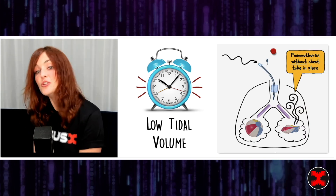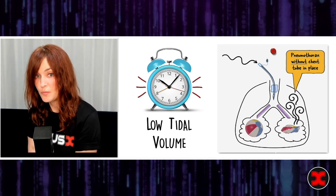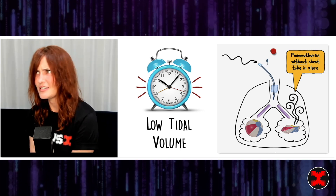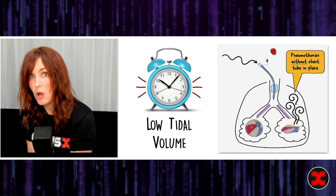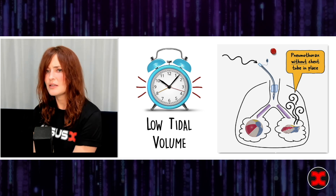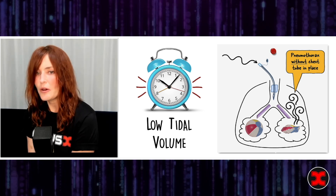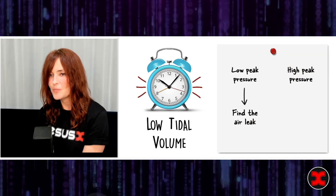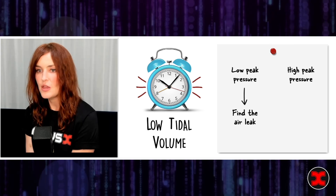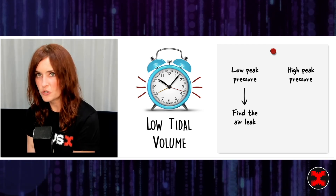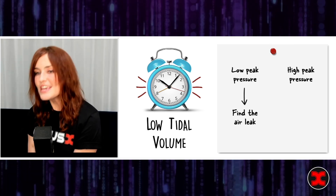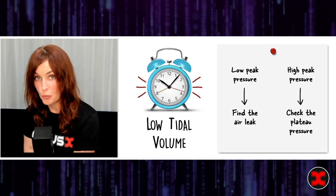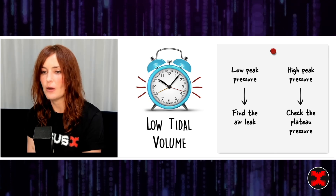What about if we have a pneumothorax but haven't yet put in a chest tube? All that air is leaking out of the lung — it's not going into the lung because it's going right out again — but it's not leaving the chest wall. All that air is building up in the chest. In this case, our tidal volume is going to be low, but our pressure is not low — our pressure is going to be high. This is where we get to the differential diagnosis for a high peak pressure, but we need more information. We have to check a plateau pressure, because that's the only way we're going to figure out what's happening.